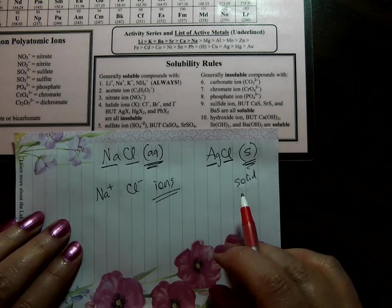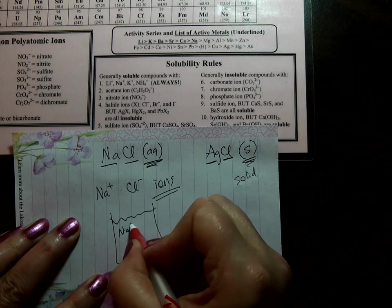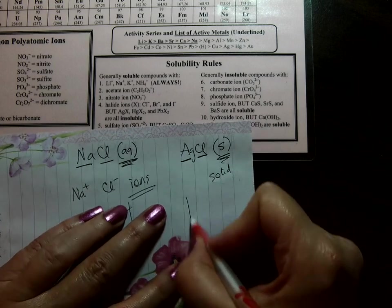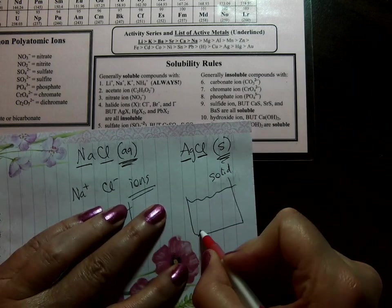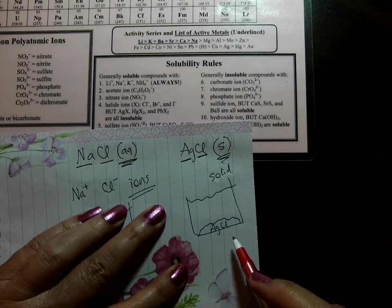So NaCl would look like this, the Na and the Cl floating around in water. AgCl would look like this, down at the bottom.